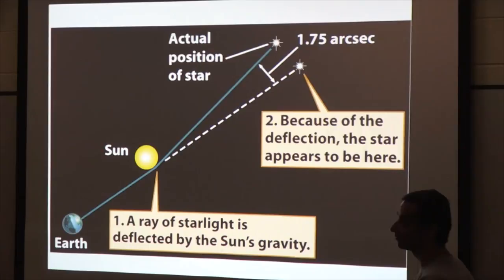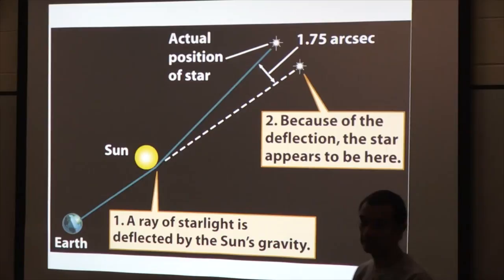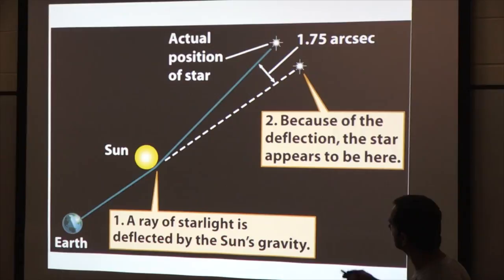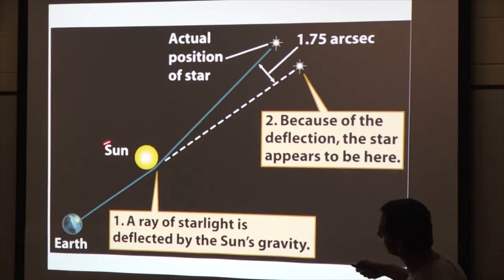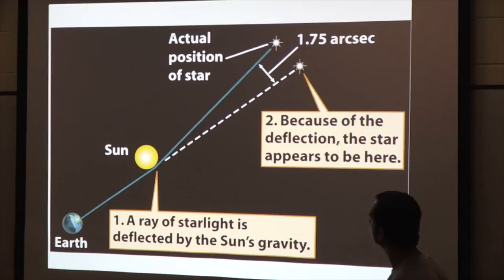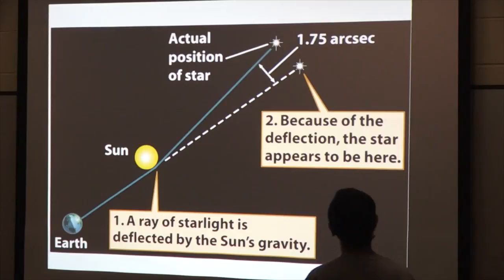This was the first experimental test of Einstein's theory, done in 1919 by Eddington. Using a solar eclipse, he showed that a star could be seen even though it was eclipsed by the sun, because the light ray coming from it gets bent by the mass of the sun due to this space-time bending effect. The apparent movement of the star was about 1.75 arc seconds — exactly what Einstein had predicted many years prior.